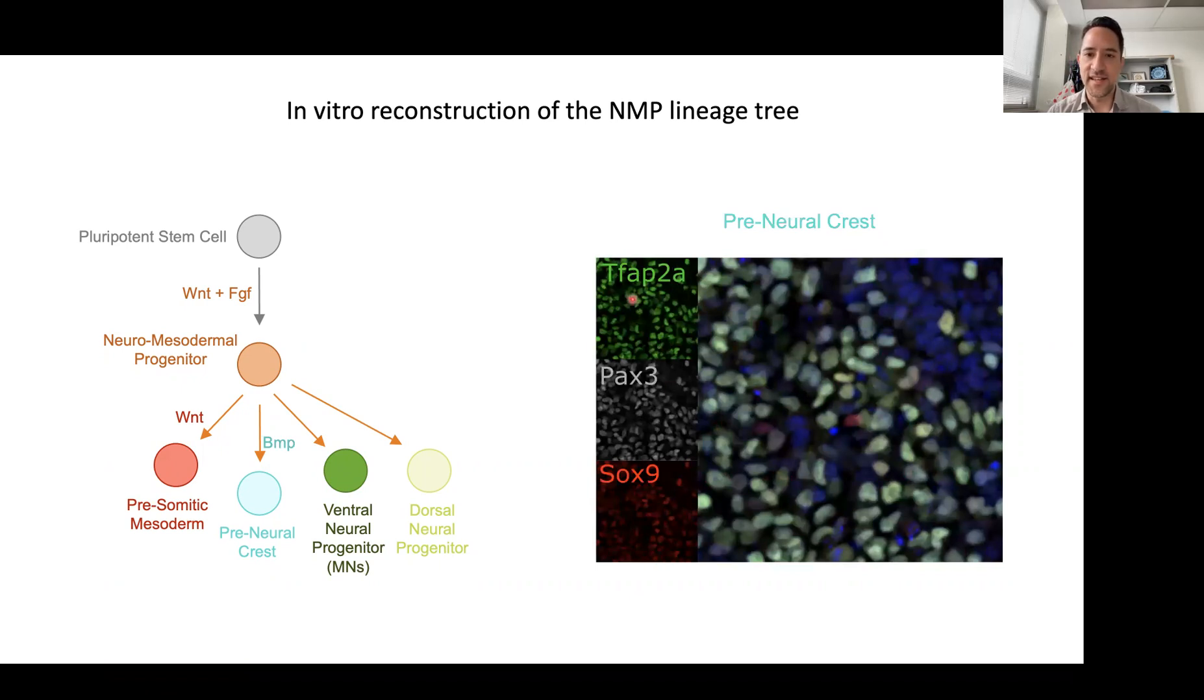In this staining, you can see three neural crest transcription factors: TFAP2A, PAX3, and SOX9. They're not always co-expressed, but there's definitely a high proportion of them.